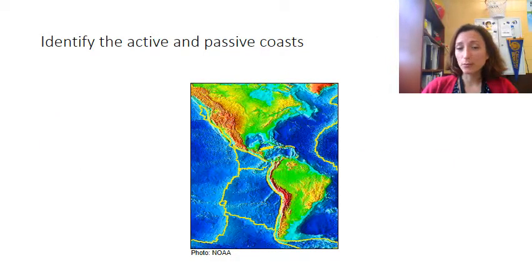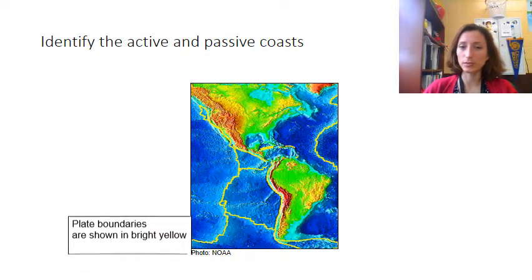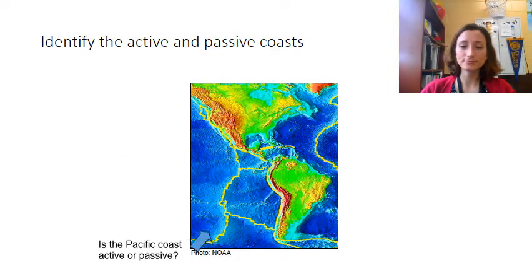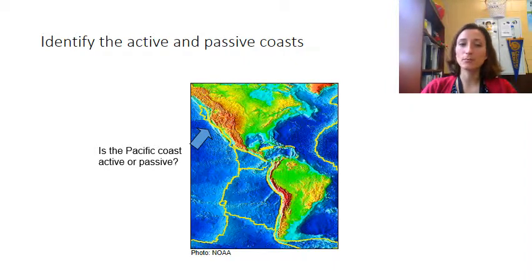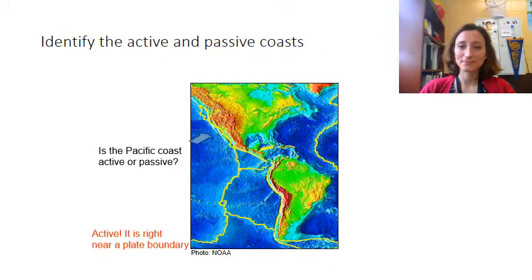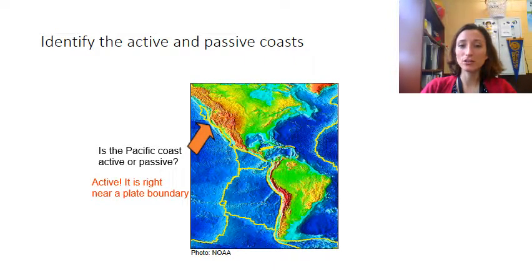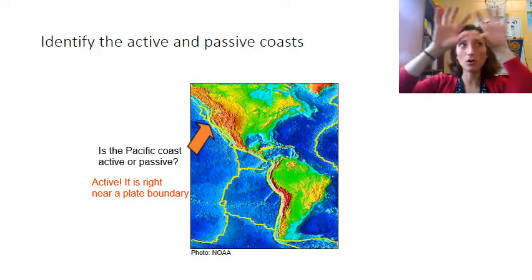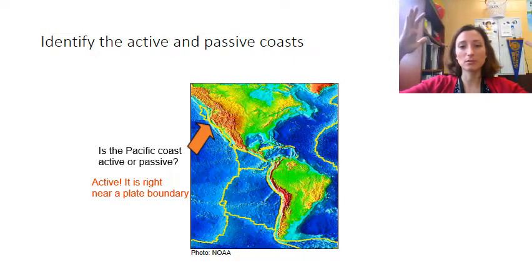Can you identify the active and passive coasts in this image? Plate boundaries are represented by those bright squiggly yellow lines — where continental and oceanic plates merge. The Pacific coast is an active coast: if you look at the location of the edge of the continent and the plate boundary in the yellow line, they're in very close proximity to each other. The ring of fire has volcanic activity all around the Pacific coasts because of that proximity to the plate.